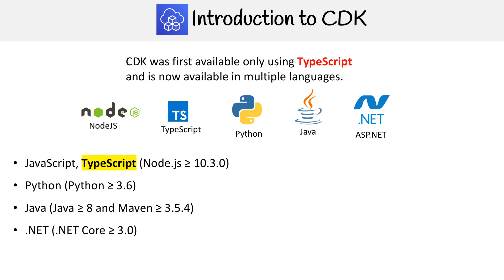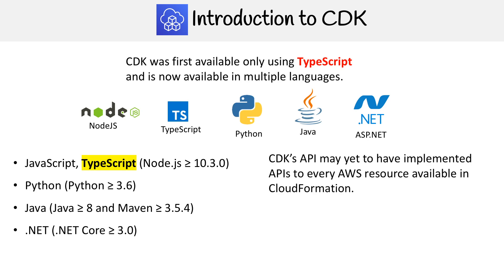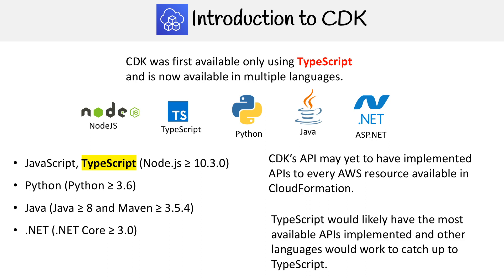I want to make a note about how up to date CDK is with CloudFormation. The CDK API may have yet to implement specific APIs for AWS resources that are available in CloudFormation — it just takes time to write this, and they have a lot of languages to support. TypeScript would likely be the one that supports the most AWS resources, followed by Python, then Java, then probably ASP.net. If you need full control of what CloudFormation offers, you might have to just use CloudFormation templates directly.